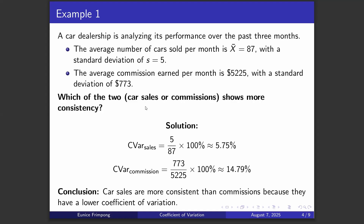For commission, the formula is once again standard deviation over mean times 100%. We have standard deviation of 773 over mean of 5,225 times 100%, approximately equal to 14.79%. Therefore, the CV for car sales is 5.75% and the CV for commission is 14.79%. In conclusion, car sales are more consistent than commissions because they have a lower coefficient of variation — 5.75% compared to 14.79%. This is a standardized measure of variation for two different kinds of data sets to determine which is most stable.